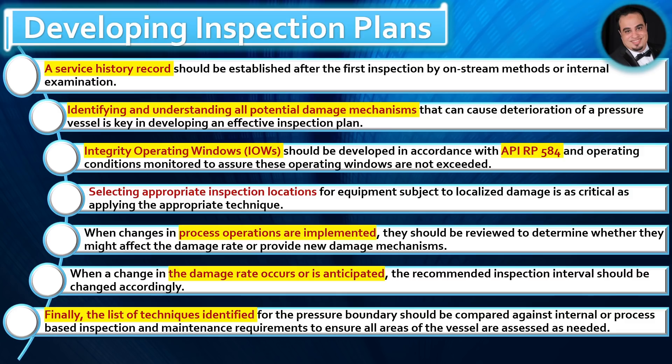Integrity operating windows (IOWs) should be developed in accordance with API RP 584, and operating conditions monitored to assure these operating windows are not exceeded. When changes in process operations are implemented, they should be reviewed to determine whether they might affect the damage rate or provide new damage mechanisms. When a change in the damage rate occurs or is anticipated, the recommended inspection interval should be changed accordingly.